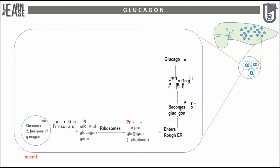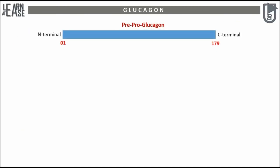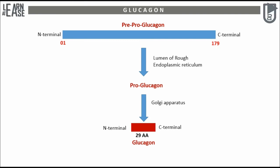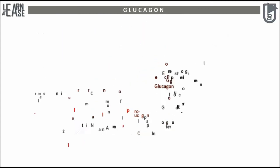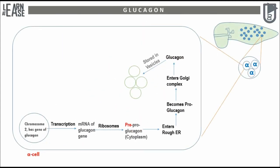In the animation, the 179 amino acid long peptide of pre-proglucagon is shown, which becomes pro-glucagon in the lumen of the rough endoplasmic reticulum, then in the Golgi apparatus it becomes active glucagon consisting of 29 amino acids. Active glucagon is just a small portion of pre-proglucagon, ranging from the 53rd to the 81st amino acid of the 179 amino acid long peptide. Active glucagon formed in this way is then stored in secretory vesicles that arise from the Golgi apparatus.